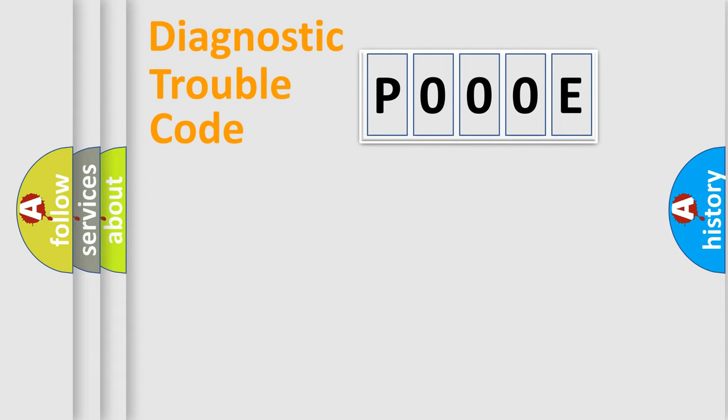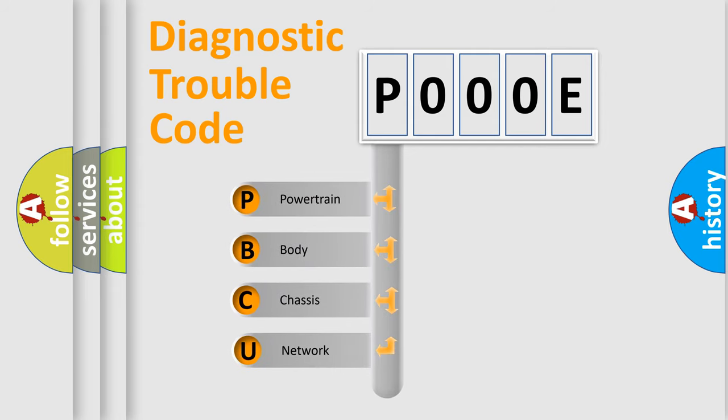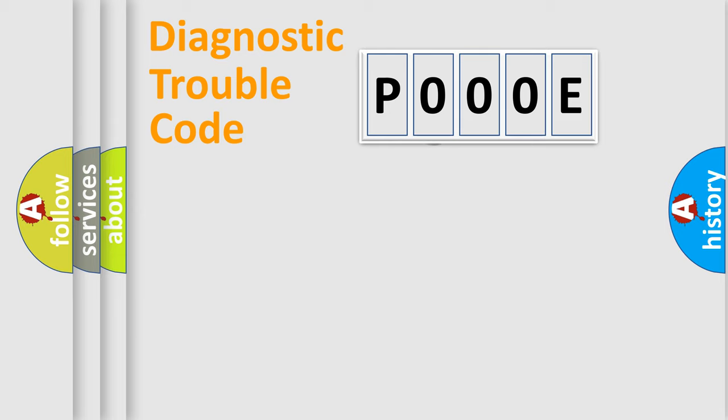First, let's look at the history of diagnostic fault code composition according to the OBD2 protocol, which is unified for all automakers since 2000. We divide the electric system of automobiles into four basic units: Powertrain, Body, Chassis, and Network. This distribution is defined in the first character code.